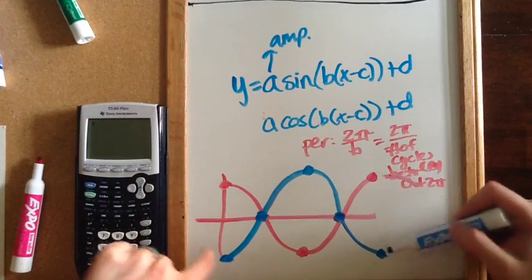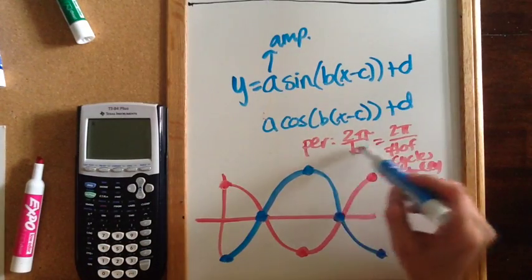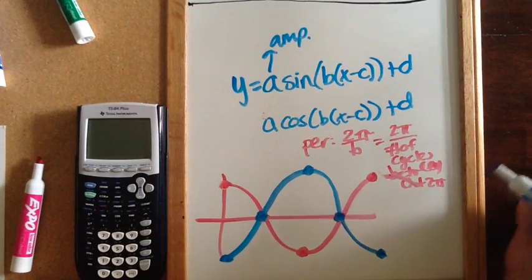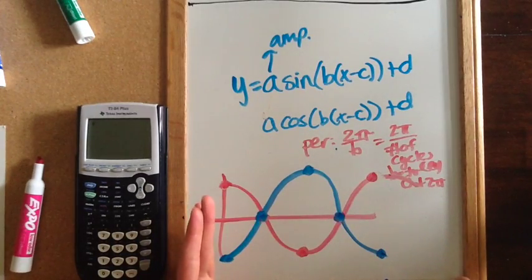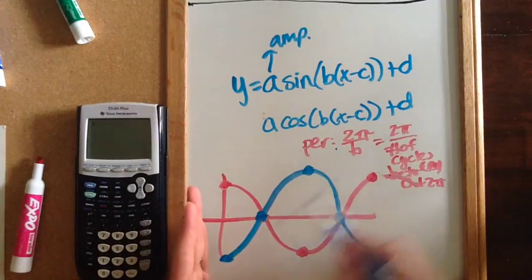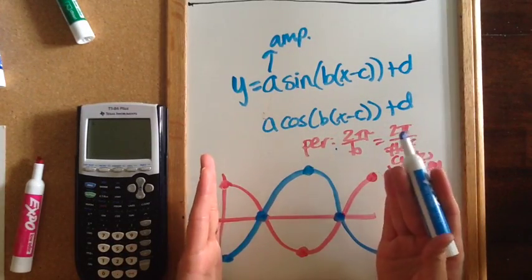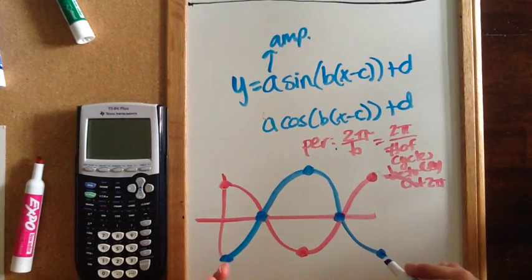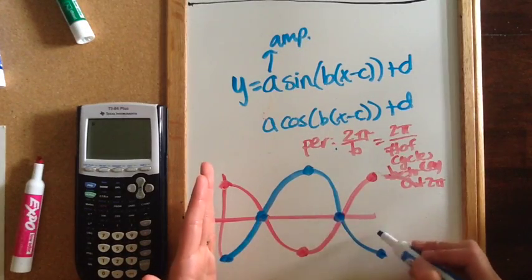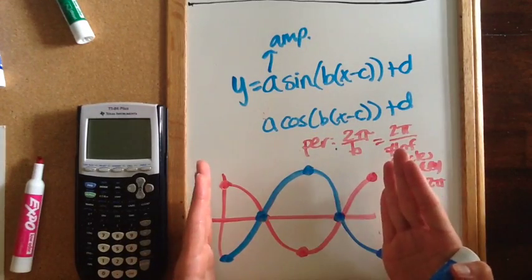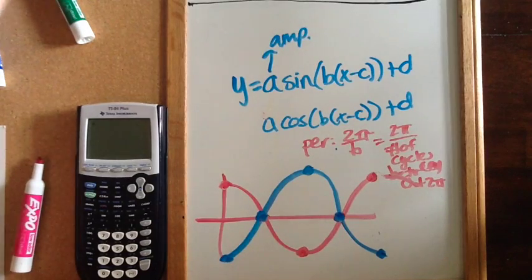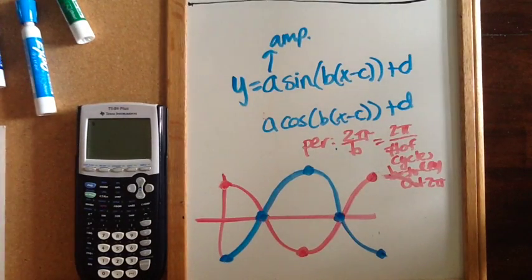Cosine goes from top to top or bottom to bottom to complete a cycle. When you find the period, you do 2 pi divided by b — that's your period length. So if the length of the cycle is 7, you should get 7. If the distance is 4 pi, when I divide, I'll end up with 4 pi as my answer. So the period is how long it takes to do one pattern before it starts to repeat itself.